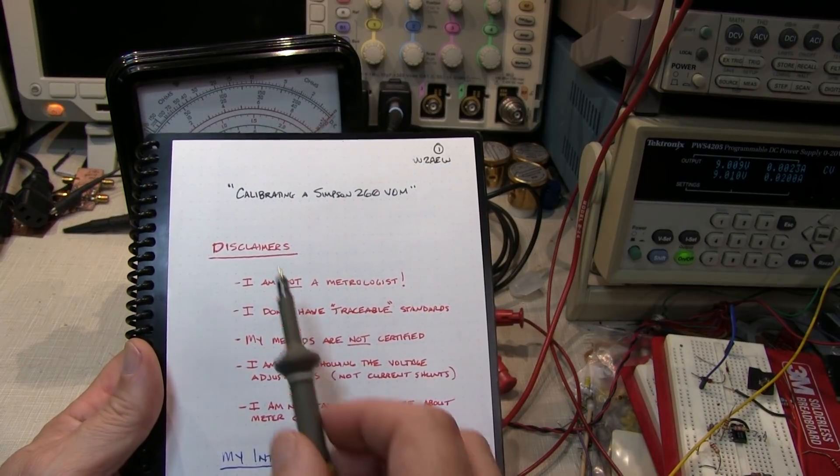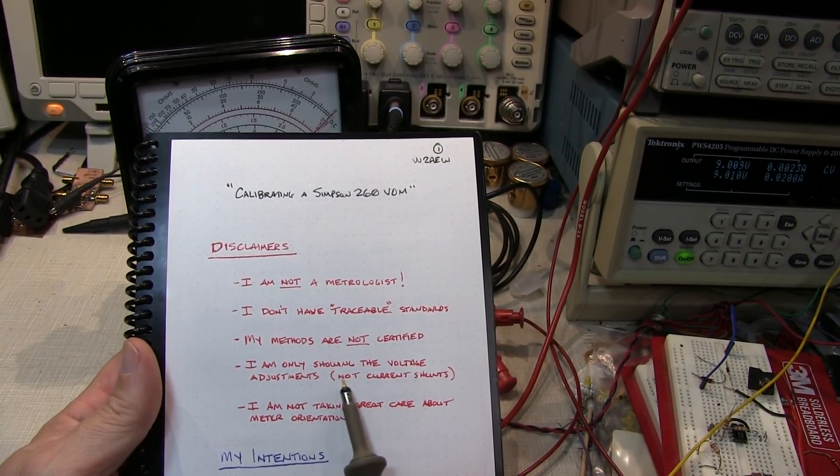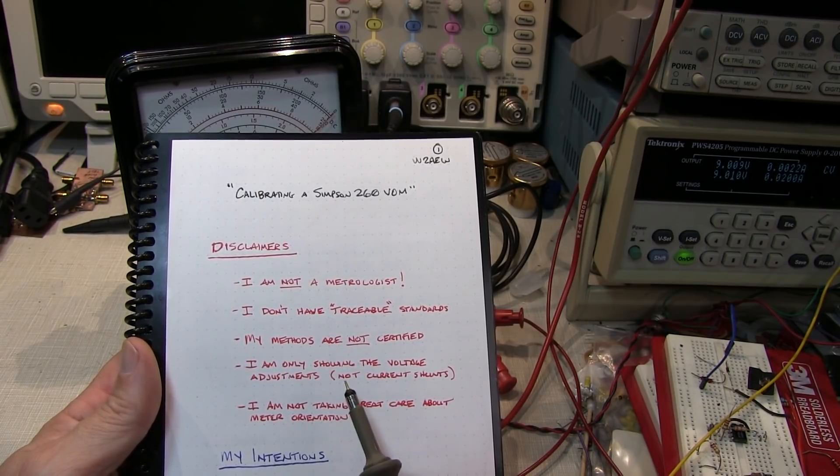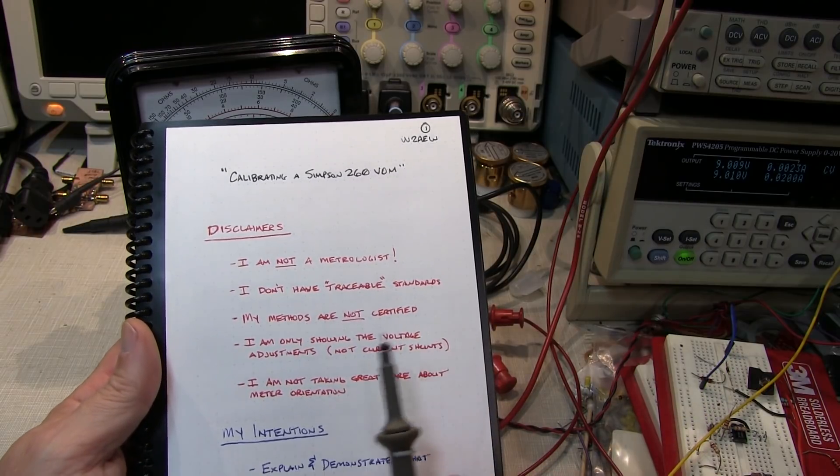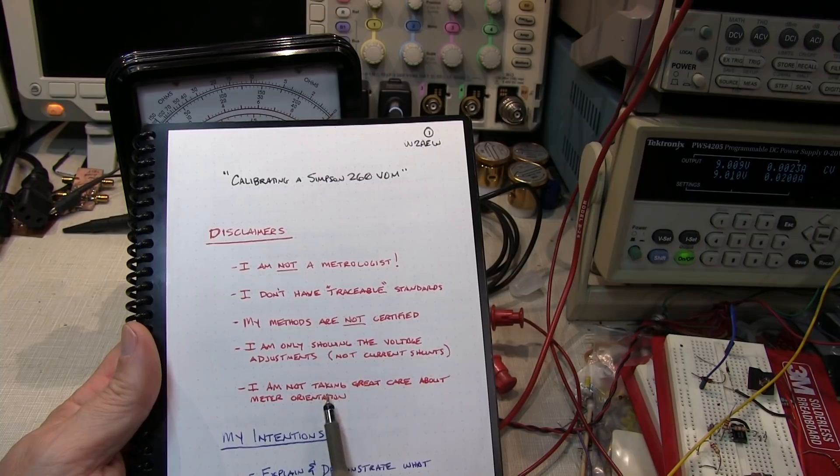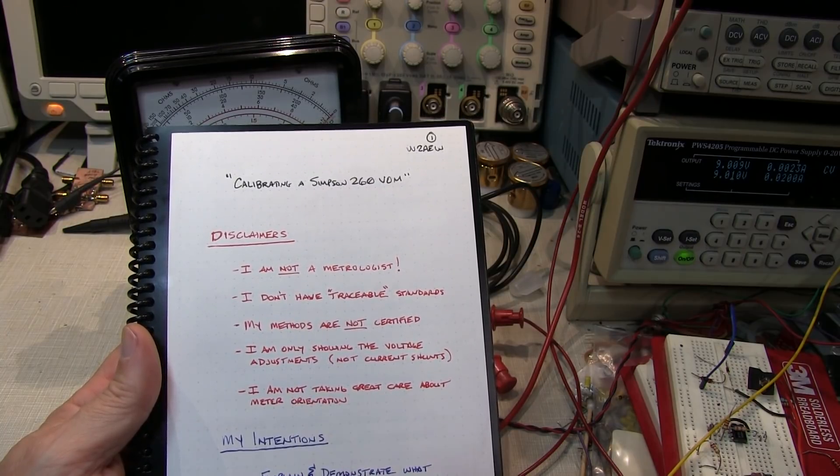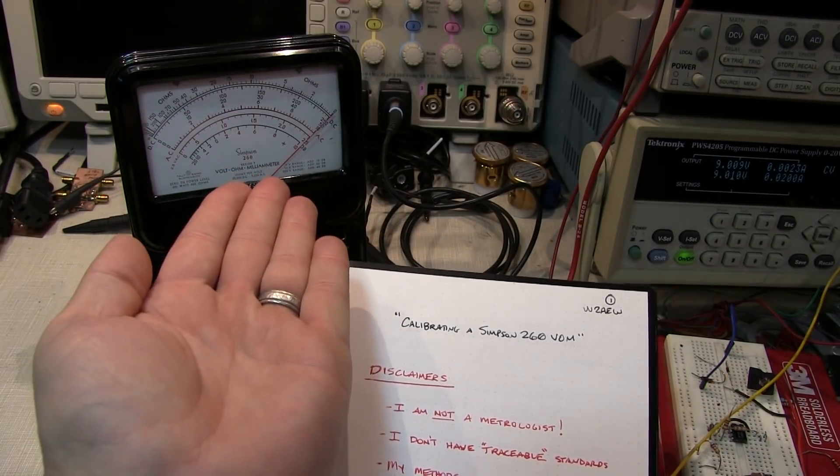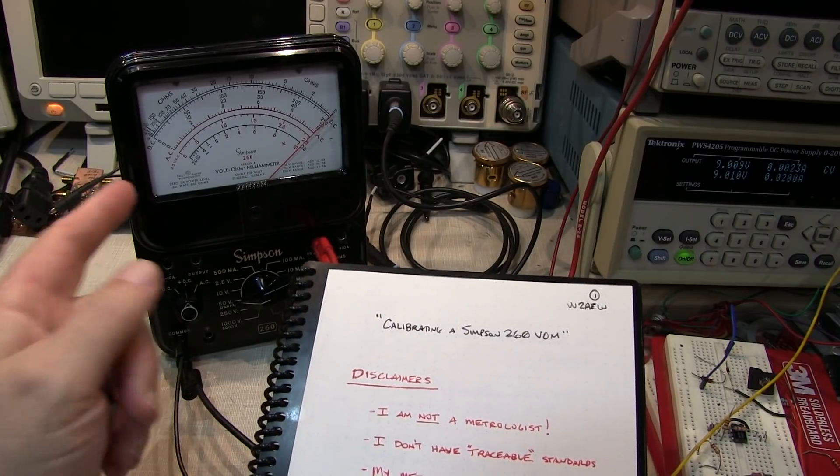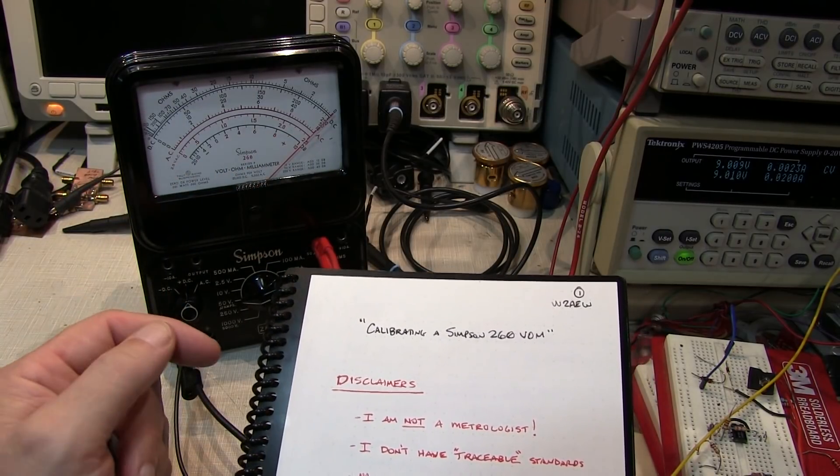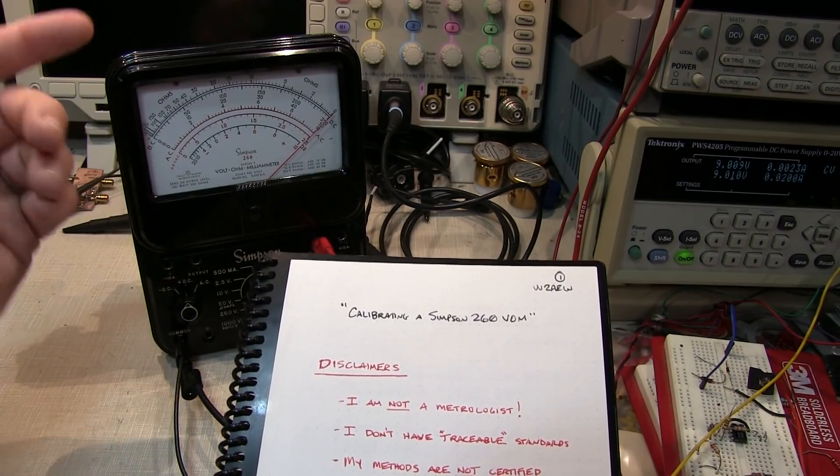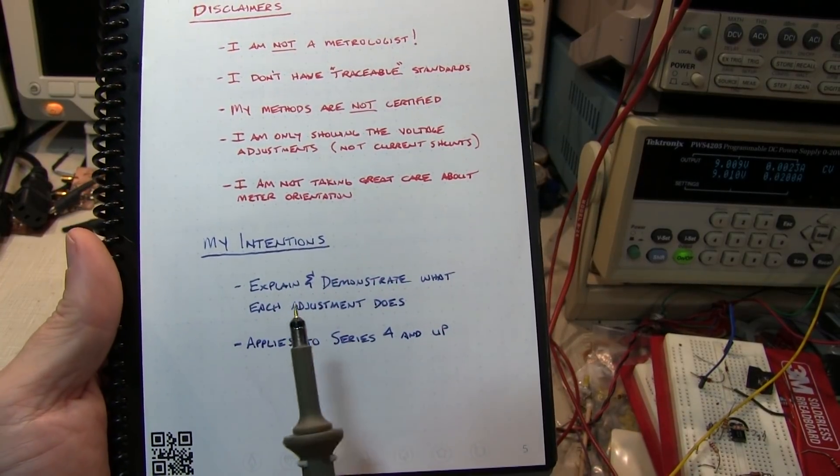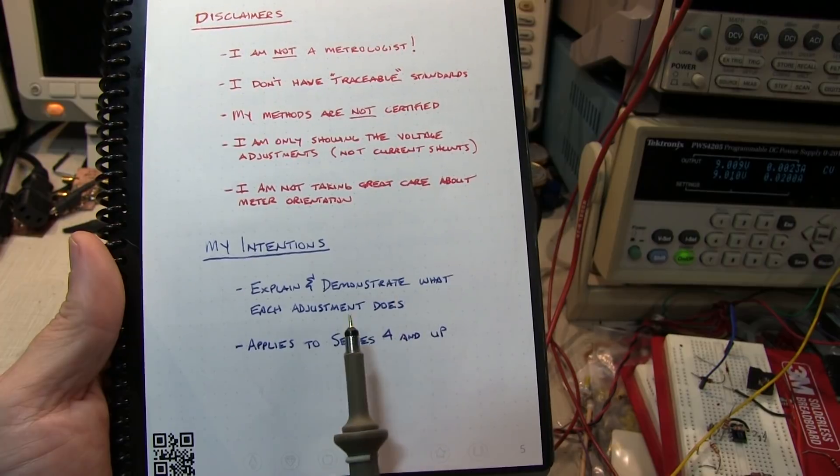I'm only going to be showing the voltage adjustments. I'm not showing the adjustments for the high current shunt because I don't have a power source that can give me a calibrated 10 amp source. I'm also not taking great care about meter orientation. To properly calibrate, it should be done in a flat position. Ideally, if the meter movement is properly balanced, it shouldn't matter, but for video purposes I'll keep the meter in this orientation so you can see the effect of the adjustments.